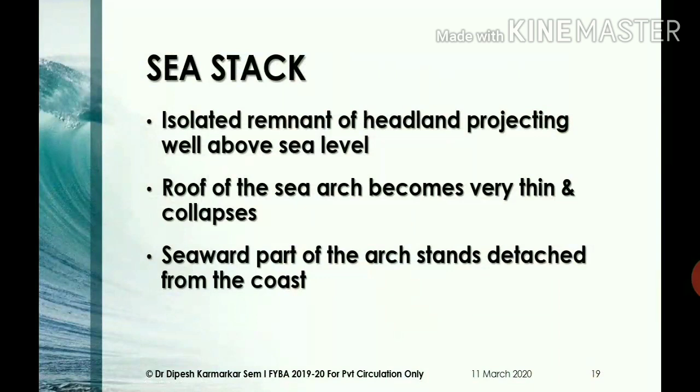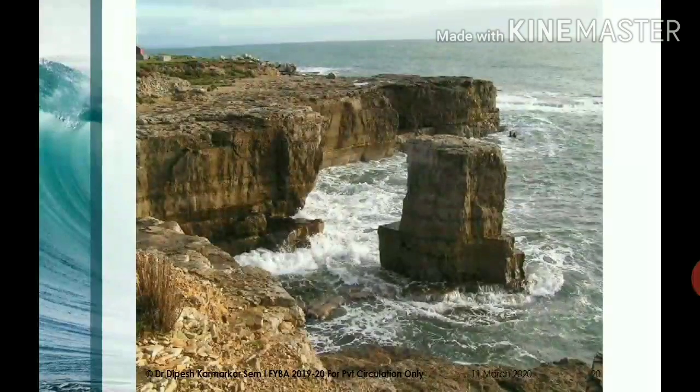Sea arcs develop further into what we call sea stacks. When the roof of the sea arc becomes very thin, it collapses. As a result, the seaward part of the arc stands detached from the coast, and such an isolated remnant of a headland projecting well above sea level is called a sea stack.